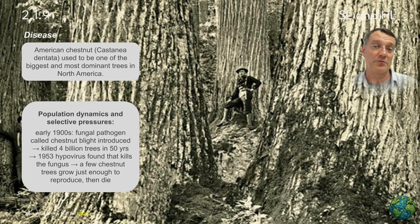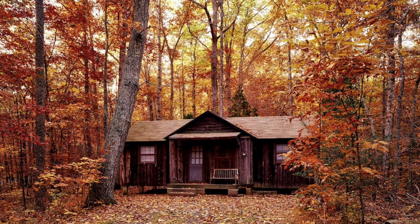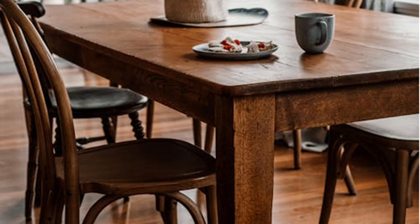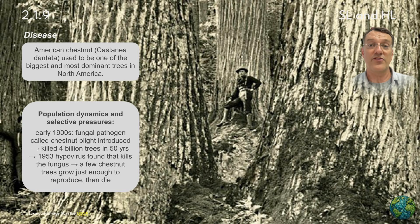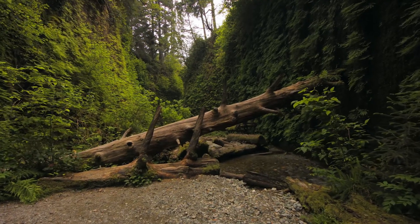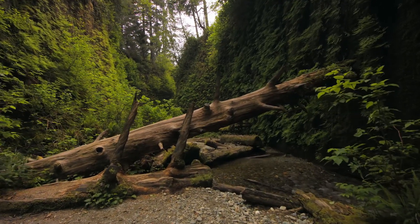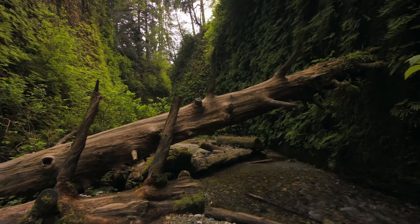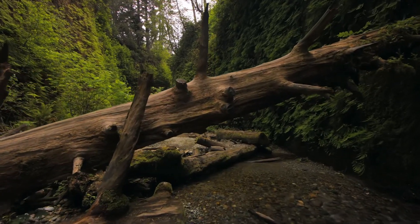Then in the early 20th century, a fungus appeared — first identified in the Bronx in New York. It was brought in from Asia by accident on boats carrying timber, and that fungus attacked chestnut trees. Something like four billion chestnut trees vanished — they all died off as a result of chestnut blight within the first 50 years after it was identified.